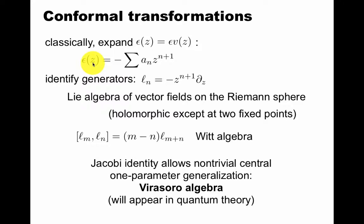We had an infinite number of symmetries somehow. If you think of this deformation as a function, then it has an infinite number of parameters in general. You can identify the generators of this symmetry as these derivatives. This is the Lie algebra vector fields on the Riemann sphere, the complex plane including the north pole. This is holomorphic except at two fixed points, and it's called the Witt algebra. You can compute the commutator of these derivative operators and you'll find this algebra. This is so far completely classical, but the Jacobi identity of this Lie algebra allows non-trivial central one-parameter generalization, which is called Virasoro.